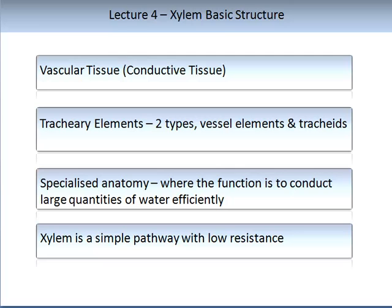The xylem is made up of tracheid elements and there are two types: vessel elements and tracheids. They are very specialised anatomically, with the function of conducting large quantities of water efficiently. To illustrate this, think about setting up a vineyard irrigation system — you would need miles of piping connected to a pump, large amounts of energy, and you may encounter leaks, which are more prone with changes of weather from cold to very hot, plus moving pump parts and much resistance.